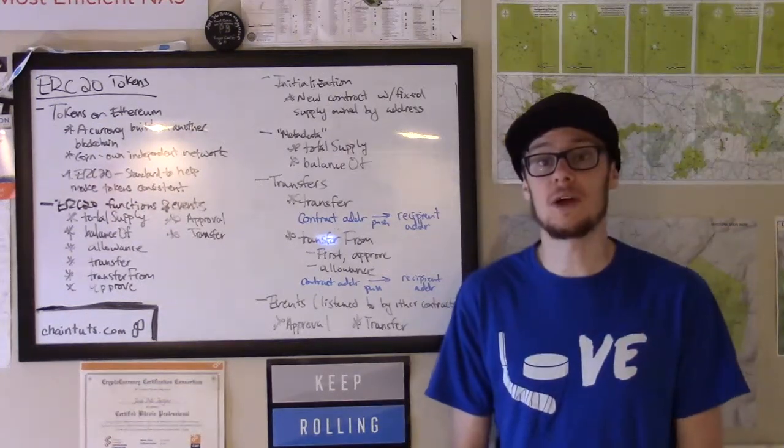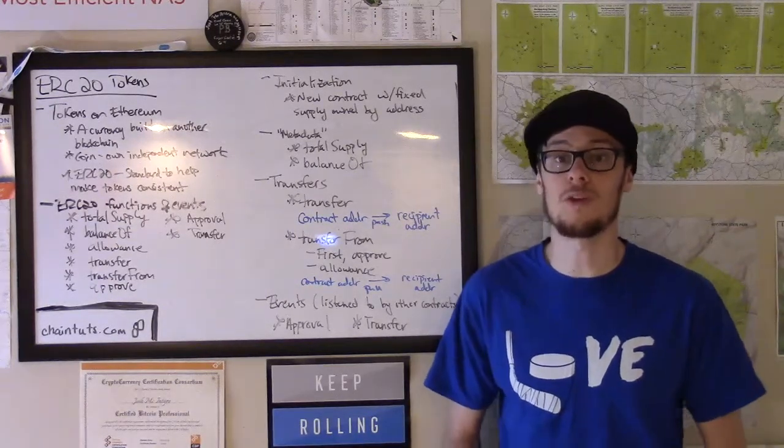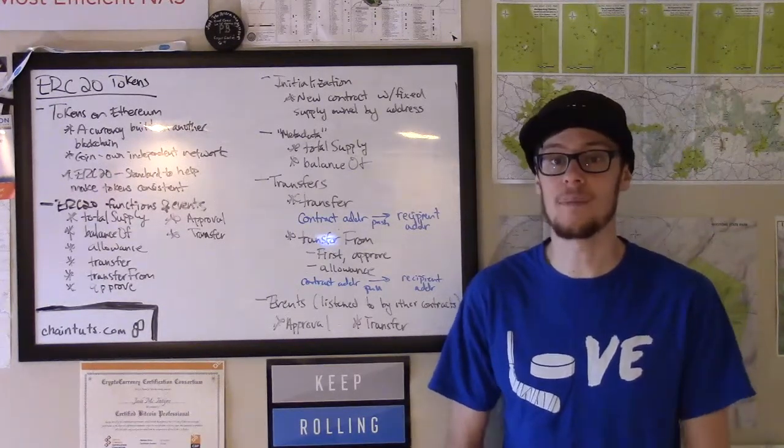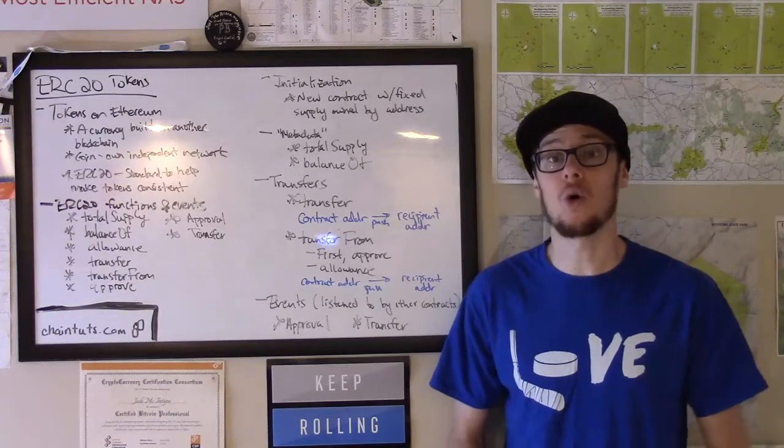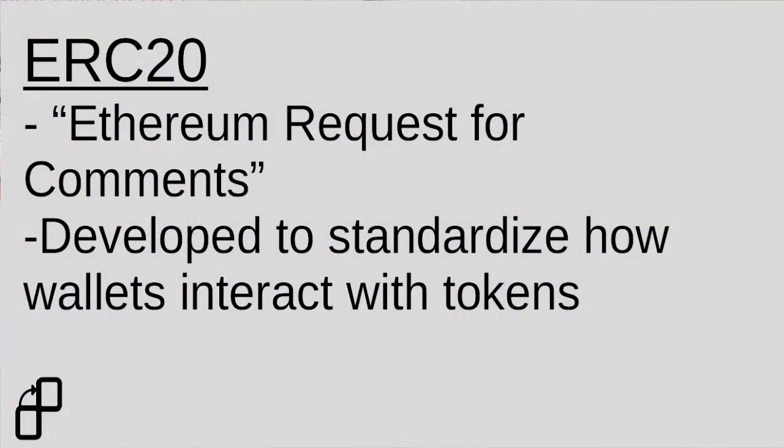In the early days of Ethereum, lots of people were creating tokens, but each one had to be interacted with by wallets in a different way. So the ERC, or Ethereum request for comments, number 20 introduced a new standard that makes the token API more consistent.